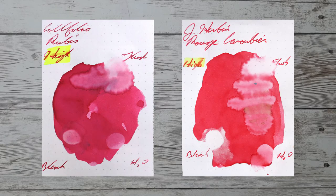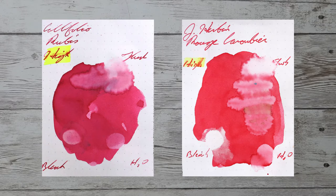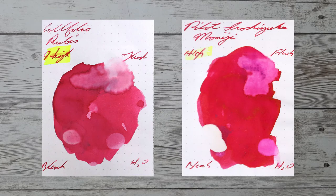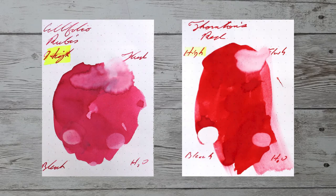With over a thousand inks reviewed, let's take a look at some color comparables. Here is Géherban Rouge Corubier. Here is Noodler's Black Swan English Rose. Here is Pilot Autumn Leaves. Here is Thornton's Red.